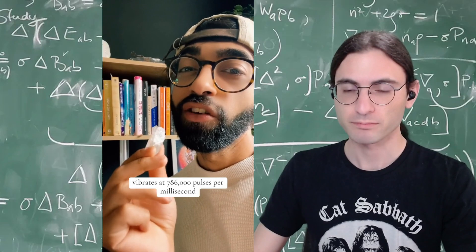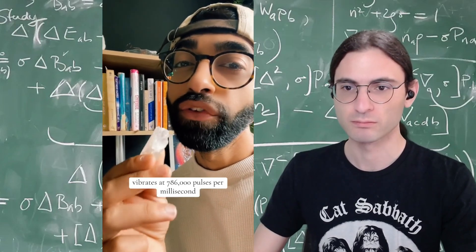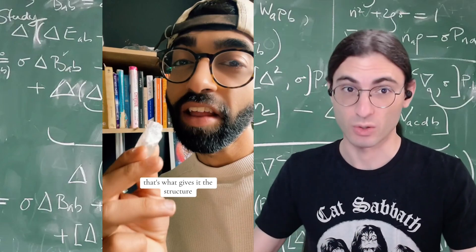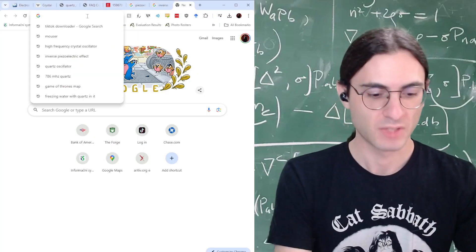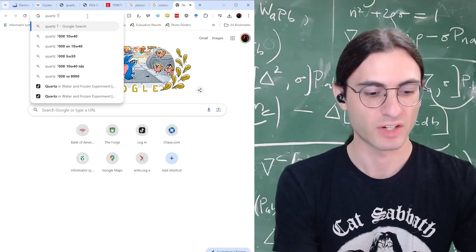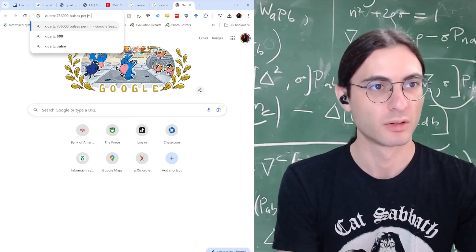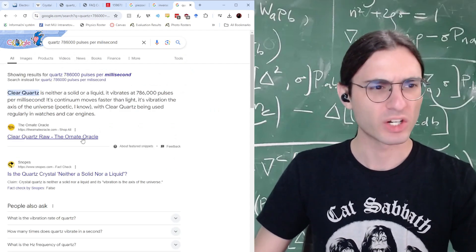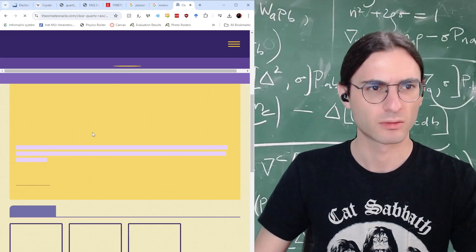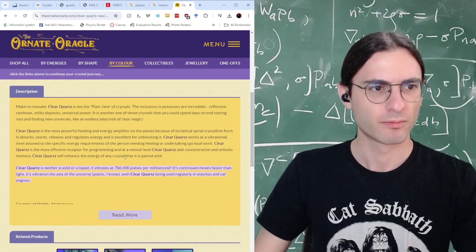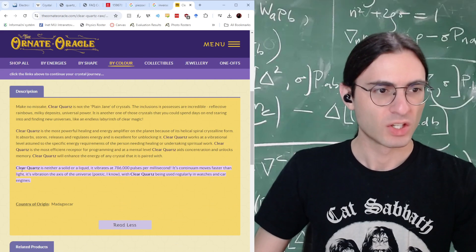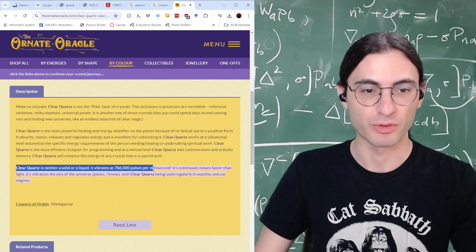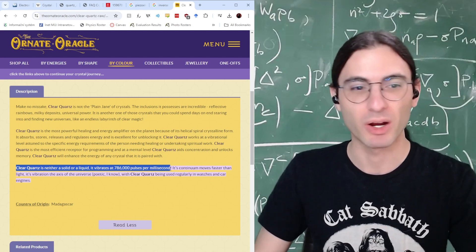It vibrates at 786,000 pulses per millisecond. So that's a claim. Let's go see if we can find the source. Quartz, 786,000 pulses per millisecond. So the ornate oracle, what is this?